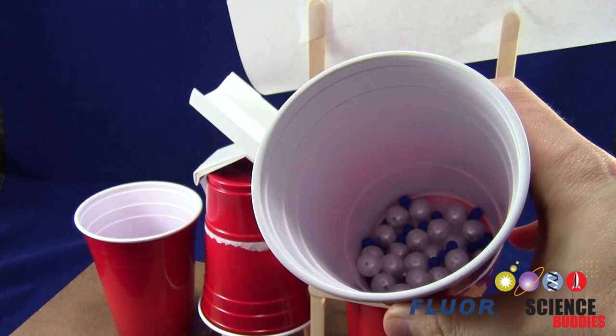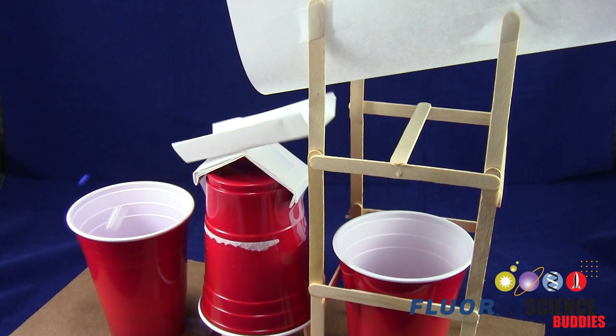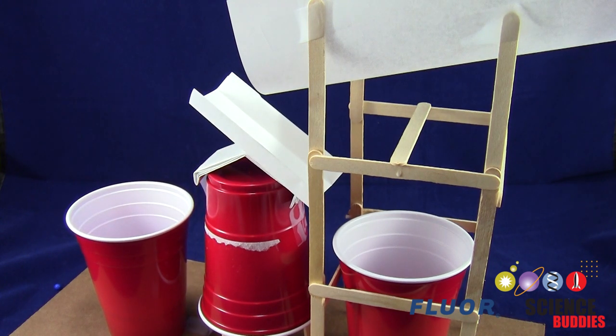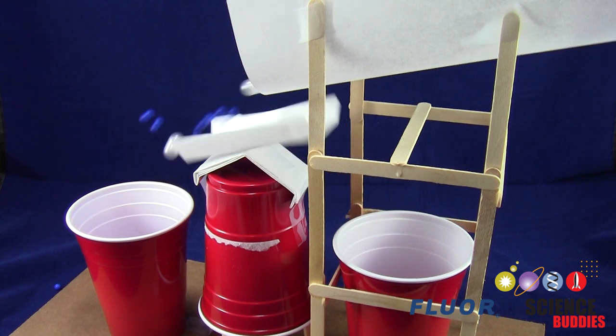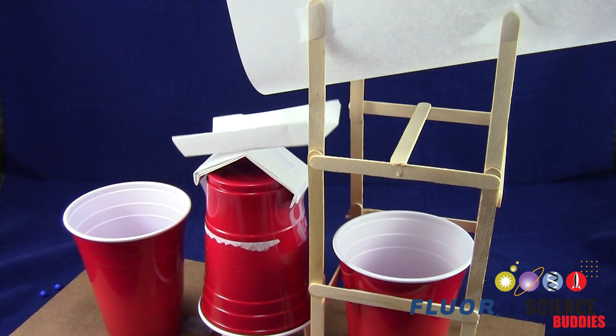However, this does not work very well when I pour an entire cup of spheres into the machine all at once because the lever doesn't have time to tilt back to the right, so most of the spheres wind up going into the left cup. Not correctly sorting the spheres into two different cups would result in a very low score.